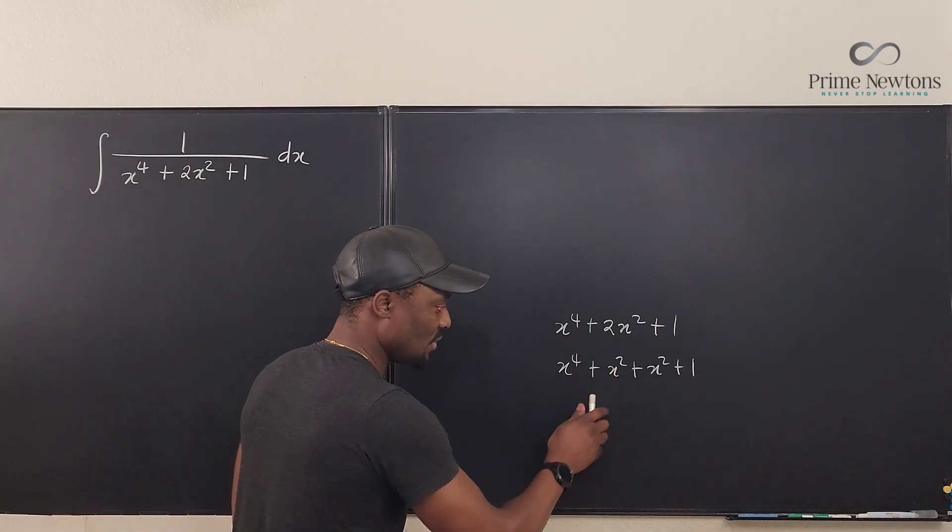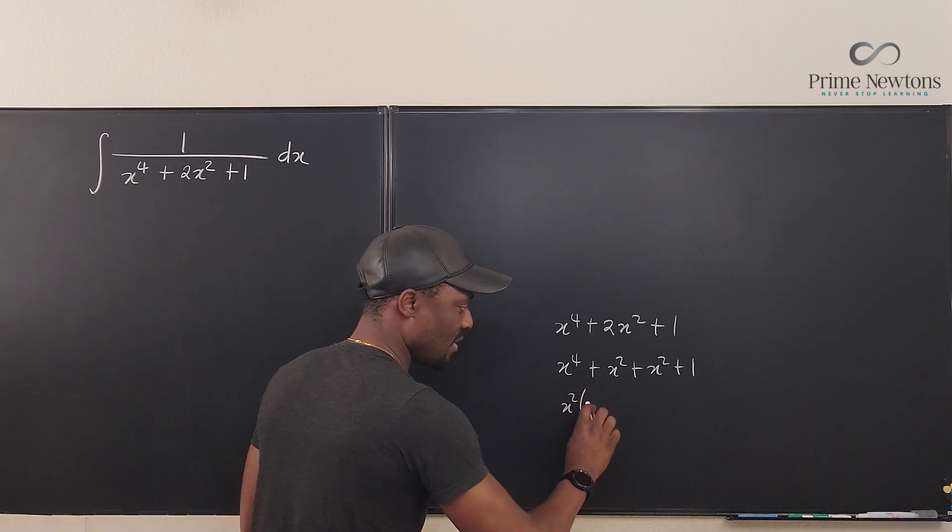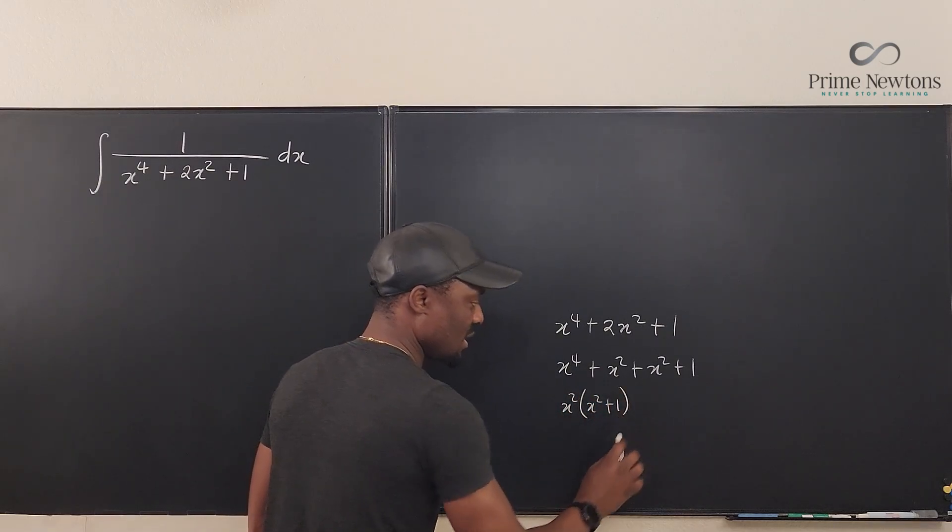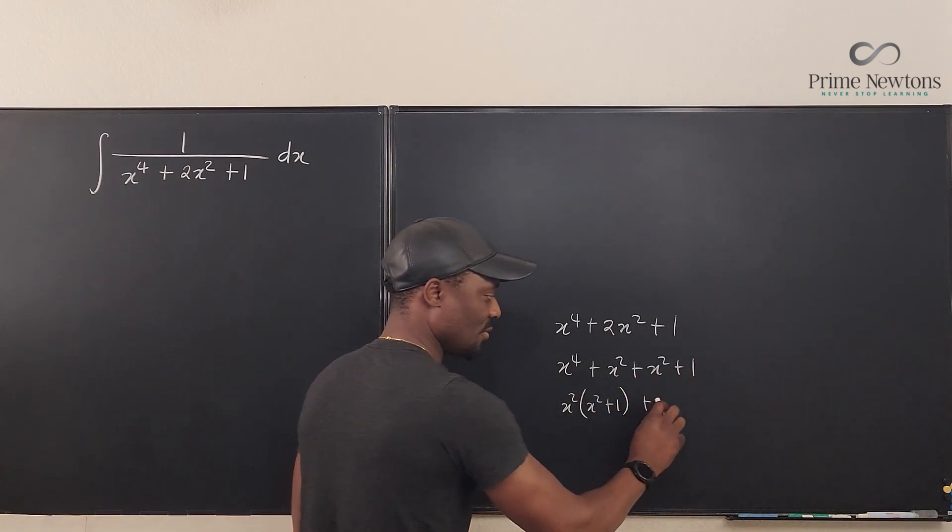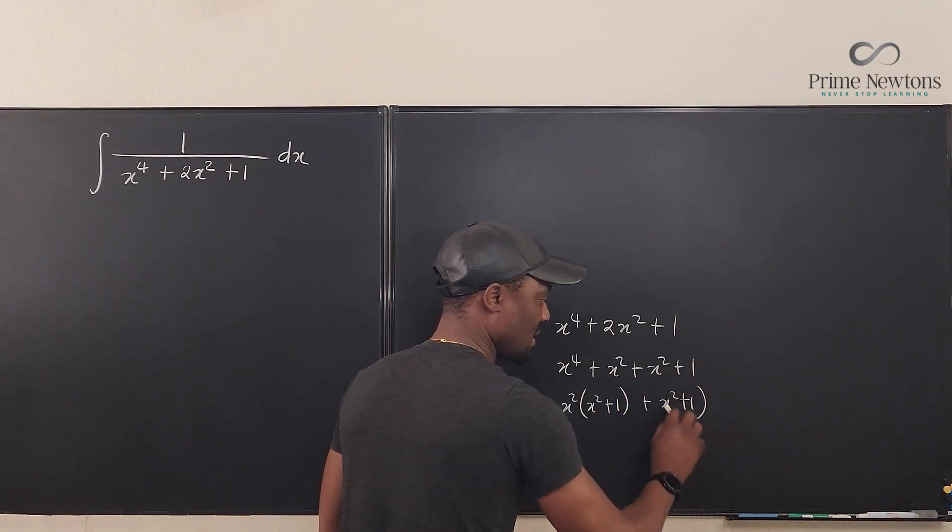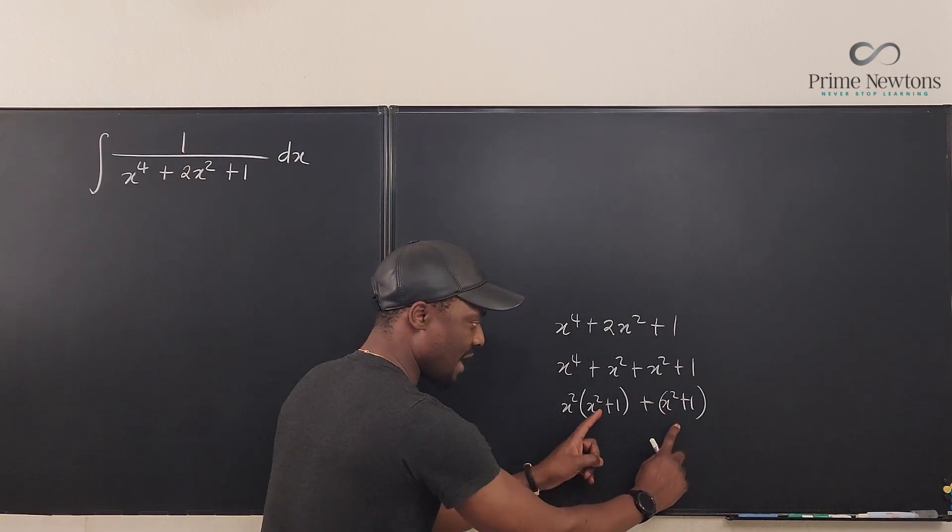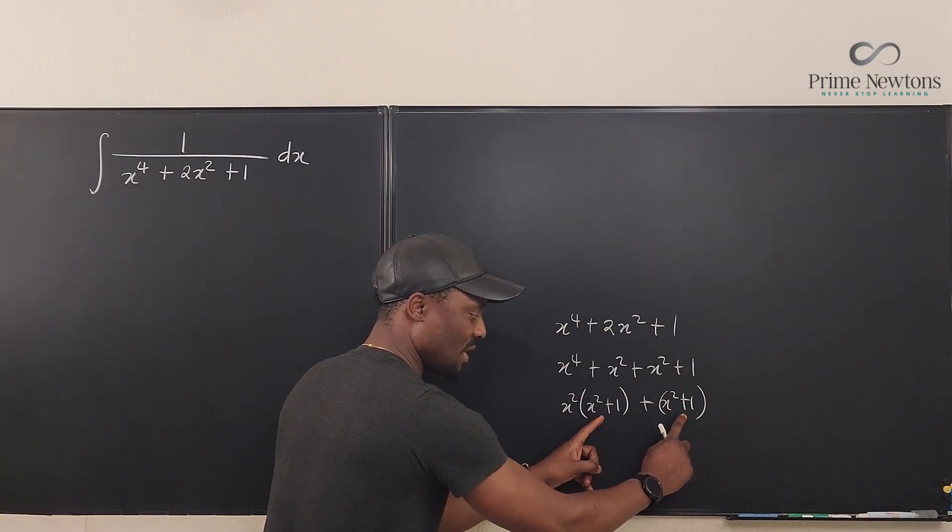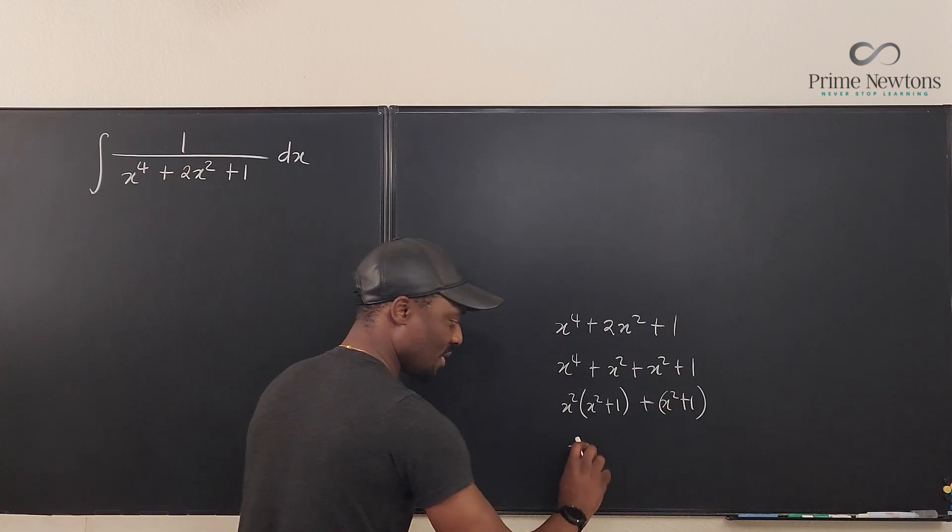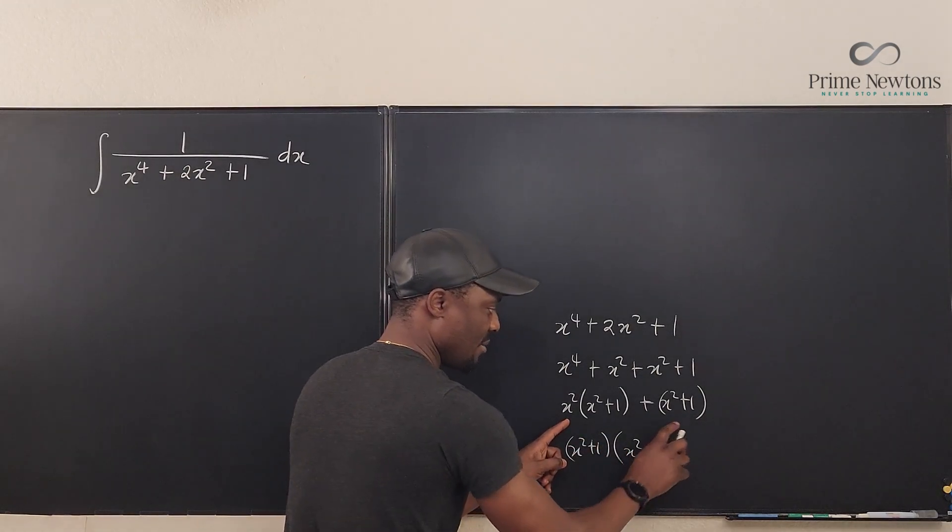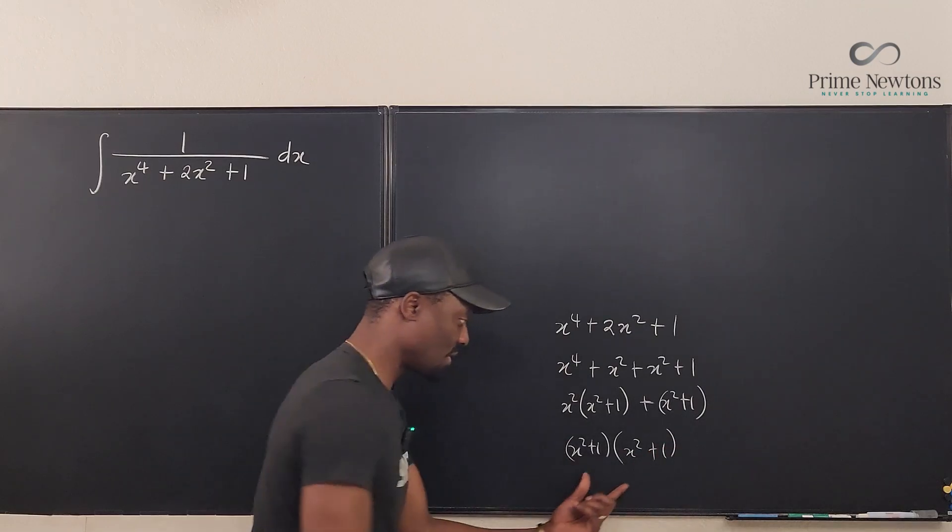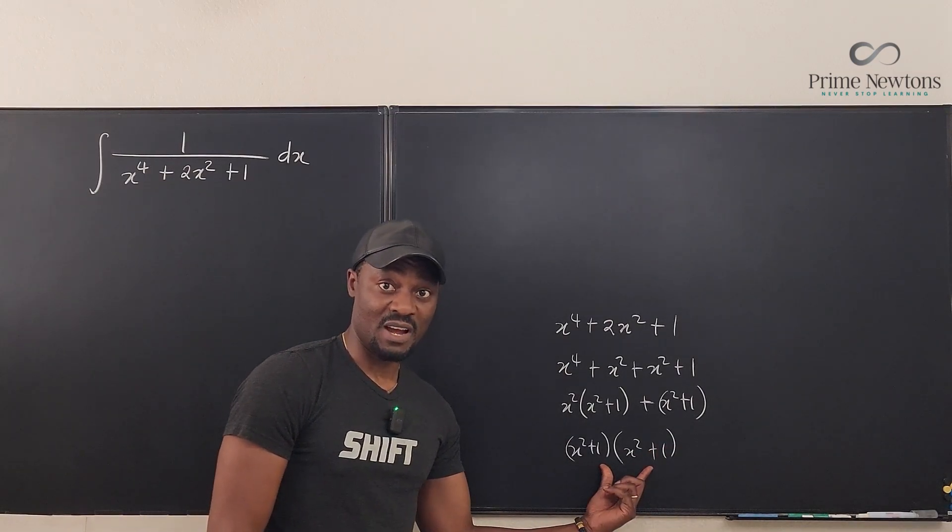What is common to these two? It's x squared. So here I have x^2(x^2 + 1). If I go here what's common to these two? There's nothing, so I just write x^2 + 1. They only have one in common. So I have x^2 + 1 here, x^2 + 1 here. It means I can factor x^2 + 1 out, and what is left is x^2 + 1 here. So it looks like this is actually a perfect square.